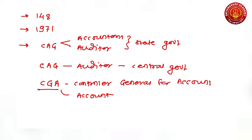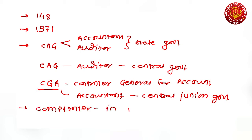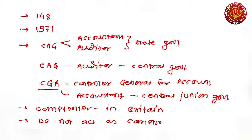One important distinction: CAG acts as Comptroller in Britain but does not act as Comptroller in India. In Britain, the respective ministries must take permission from the CAG before spending money. In India, ministries do not require any permission from CAG for spending money — most expenditures in India are post-mortem in nature, meaning CAG examines expenditure after it has already been spent by the concerned ministries.